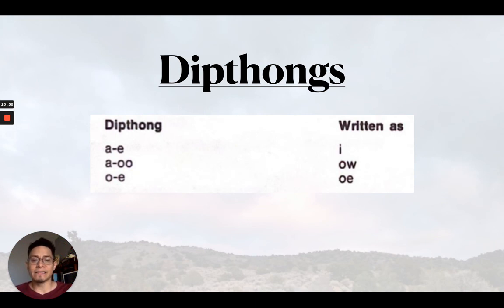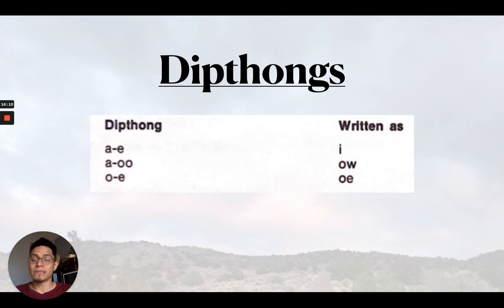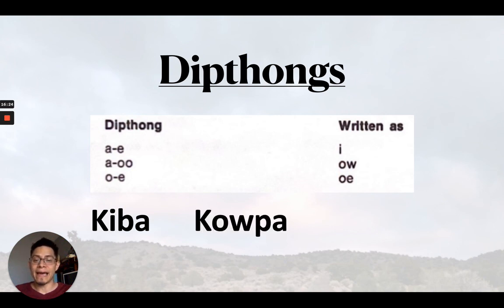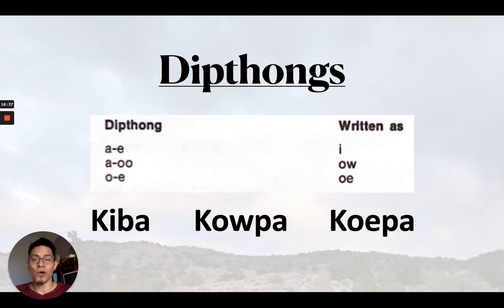Lastly, there are diphthongs in the Paiute language — two vowel sounds basically pronounced as one. The AE sound becomes AI and is written with the letter I. It can also be pronounced AE. As in the word 'qaiva,' meaning mountain. The AU sound becomes 'aw' and is written OW, as in the word 'qaupa,' which means leg. And finally the OE sound becomes OE, written OE, as in the word 'qaupa,' which means something like a longhorned or mountain sheep.